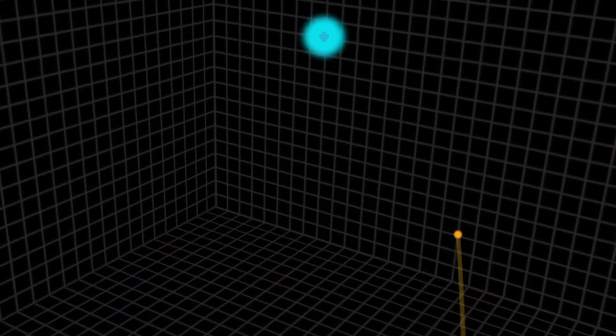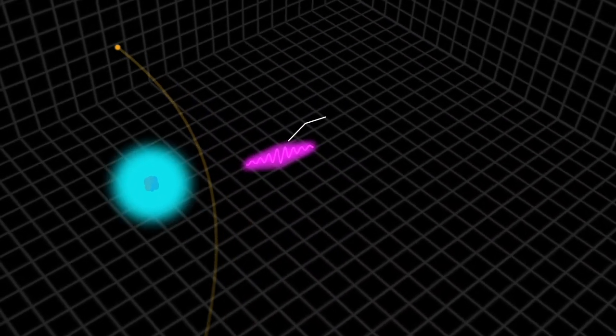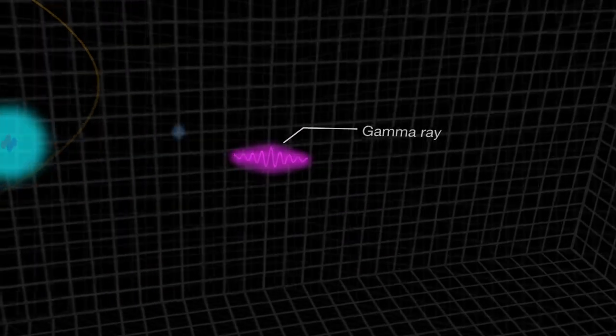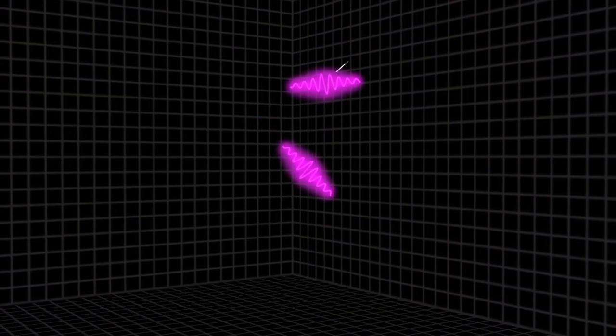But electrons and protons make gamma rays in different ways. Cosmic ray electrons do so when they're deflected by passing near the nucleus of an atom. Accelerated protons may collide with an ordinary proton and produce a short-lived particle called a neutral pion. These pions quickly decay into a pair of gamma rays.